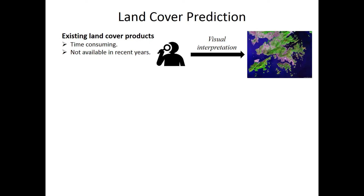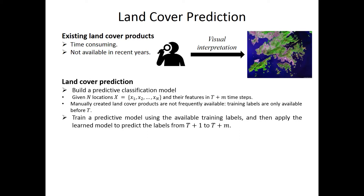Many existing land cover products are still manually created by visual interpretation of satellite images, so this process can be very time-consuming and makes these products not available in recent years. In this work, we propose to build a predictive model using the available products from history — for example, before time step T — and then we apply this learned model to do the prediction in recent years from T+1 to T+N.